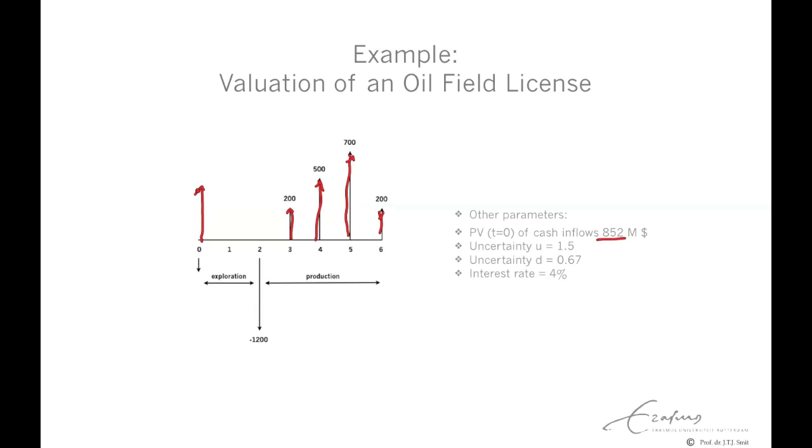During the two-year period, oil prices may go up or down. There is also uncertainty involved in finding the quantity of oil. So this 852 might go up with a factor 1.5 per year or might go down with a factor 0.67 per year.